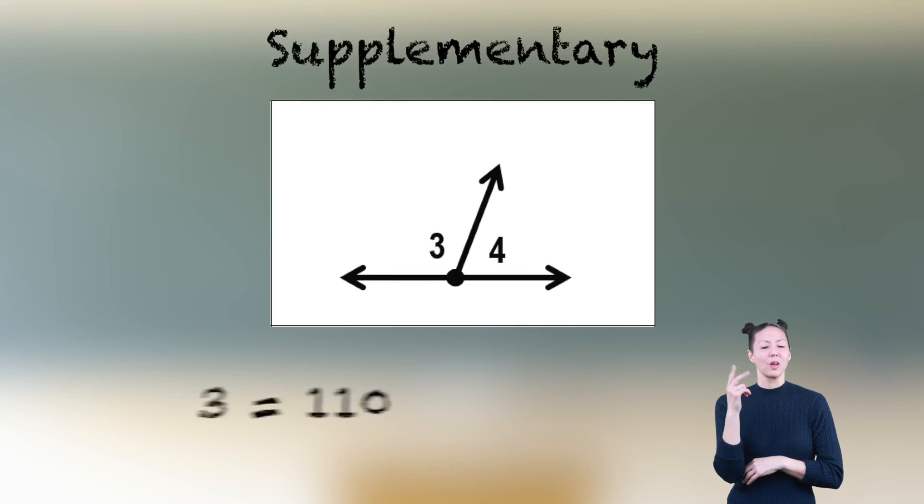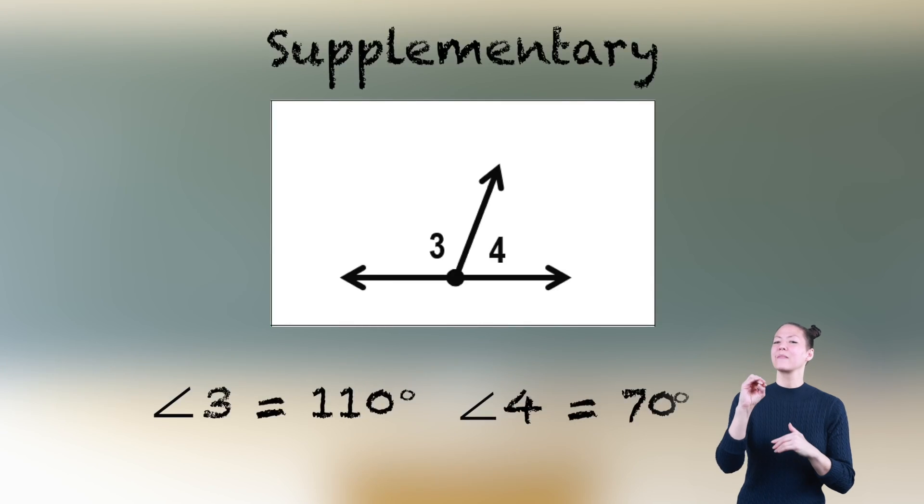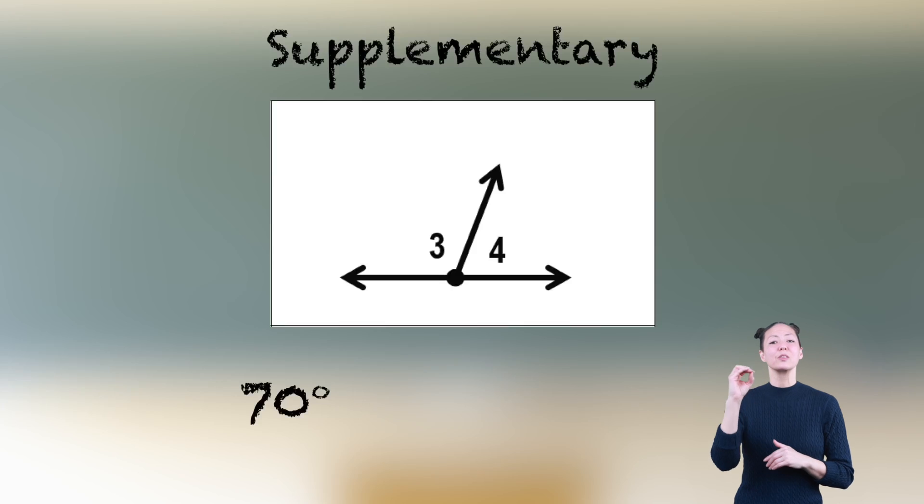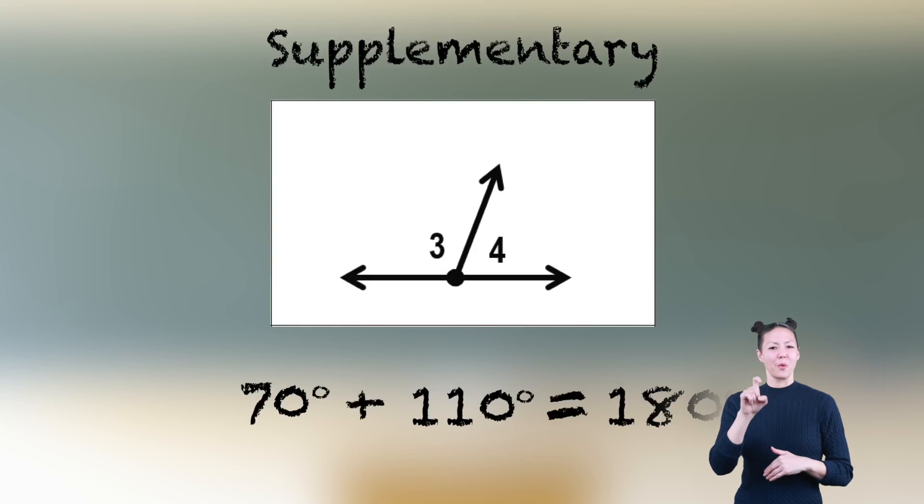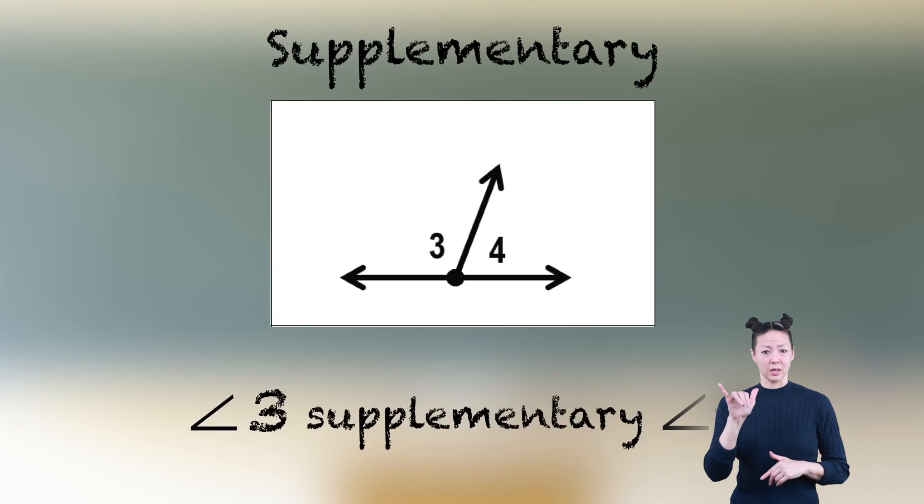Angle 3 equals 110 degrees, and angle 4 equals 70 degrees. 70 plus 110 equals 180 degrees, so angle 3 is supplementary to angle 4.